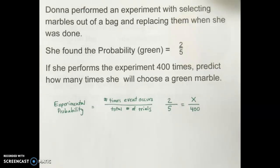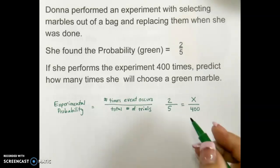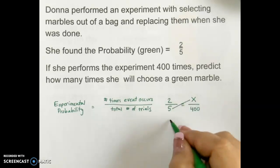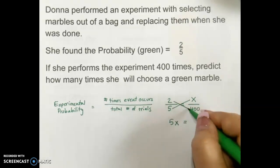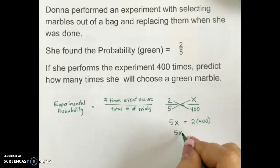You can remember from previous lessons how we solve a proportion using cross products. So we can multiply 5 times the x value, 2 times the 400, which means that 5x is equal to 800. We're then going to use an inverse operation of dividing by 5 so we can isolate our variable, and that's going to give us x equals 160.